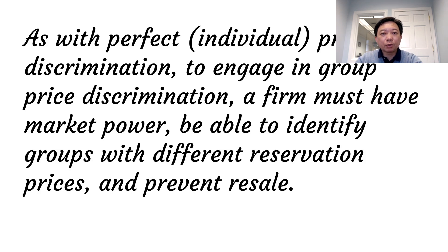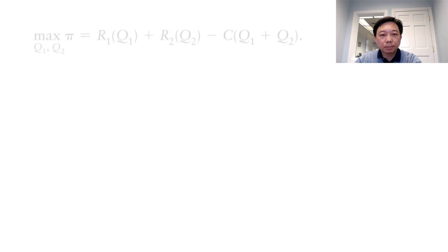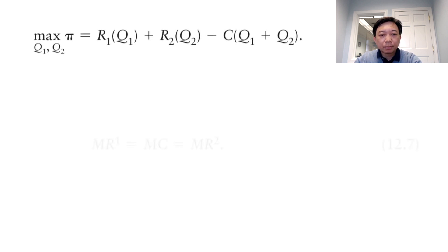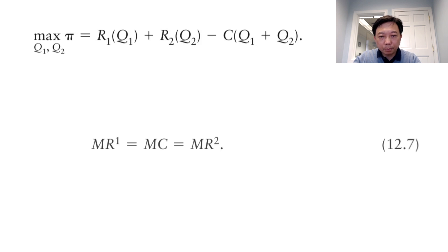Suppose there are two types of consumers with different demand curves. The monopoly firm chooses quantities to maximize its profit. It can be proved that the marginal revenue from the first group equals the marginal revenue from the second group, and both equal the marginal cost.